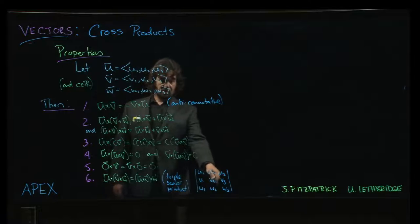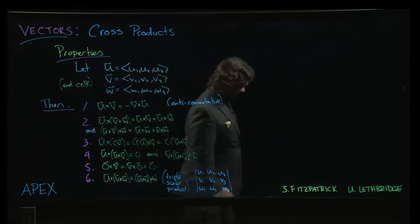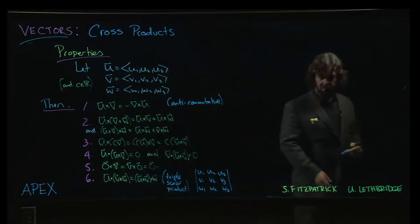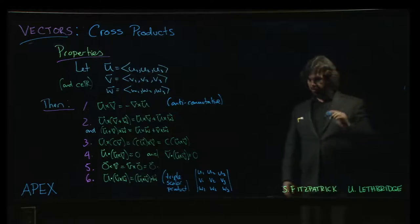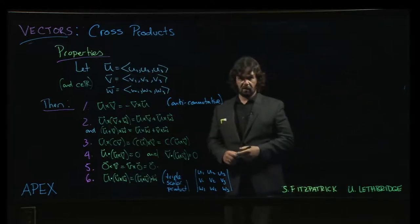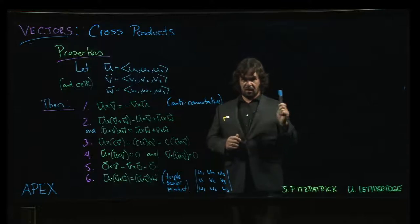It turns out this has a geometric interpretation. We'll talk about that in a bit. You can interpret that triple scalar product as a volume. And the cross product itself turns out to have some connections to area. And we'll be talking about that momentarily.